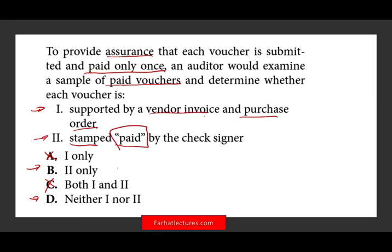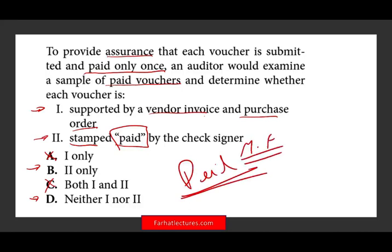Option two: the voucher is stamped paid by the check signer. Yes — once you stamp it paid, someone who gets their hands on that voucher will see it's already paid and therefore won't pay it twice. Stamping it paid is good internal control. There is still room for fraud — somebody could knowingly write another check — but that's fraud, not error. For good internal control, stamp it paid. This way, if somebody sends another check, it's easier to determine whether it was fraud or error.